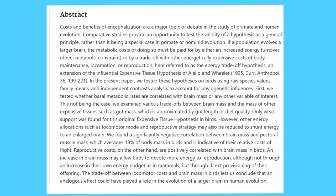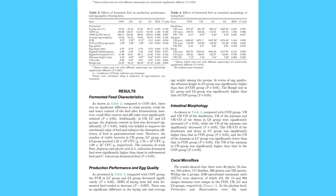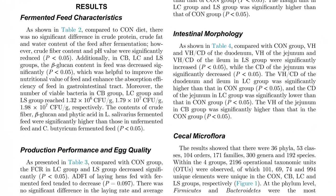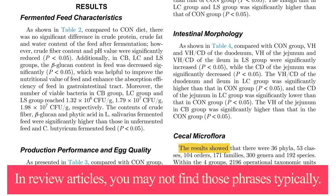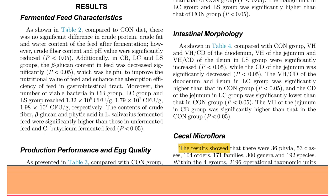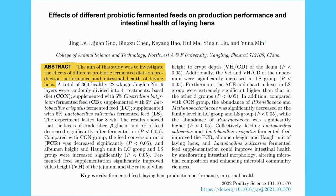In a research article, you can find phrases such as 'we tested,' 'we measured,' or 'we investigated.' Also in the results section, you can find phrases such as 'the study found' or 'the results indicate.' Whereas in a review article, you may not find those phrases. Typically, the purpose of a research article is to answer a research question asked by the researcher.